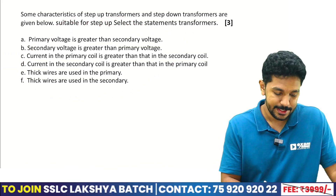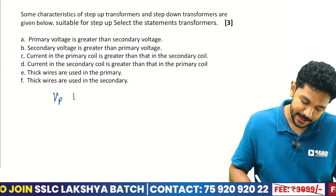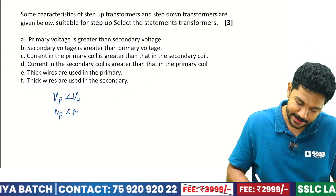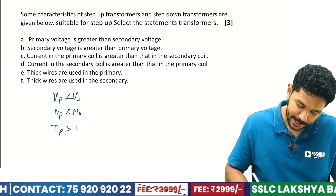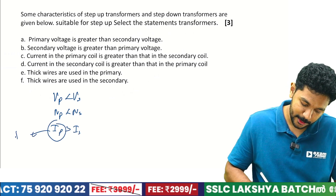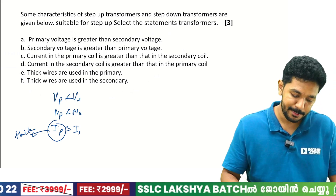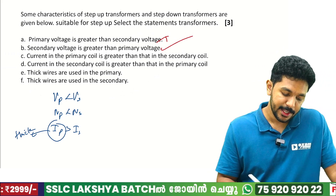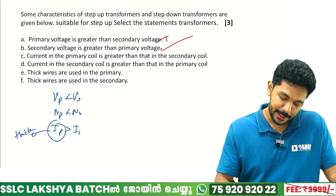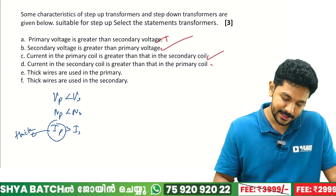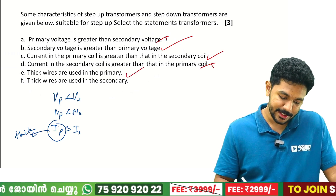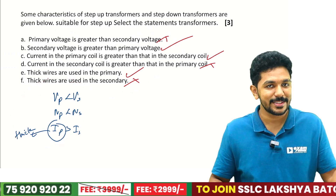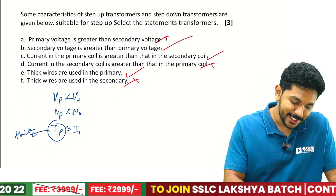For a step-up transformer: Vs is greater than Vp, and Ns is greater than Np. The secondary current is less than primary current. In terms of wires: thick wires are used in the primary (high current side) and thinner wires in the secondary. If you want full detail, you can attend the class or watch the YouTube channel.